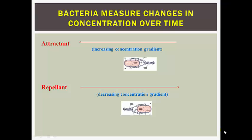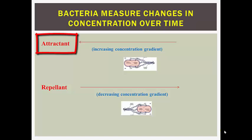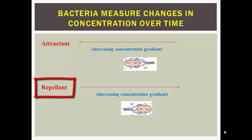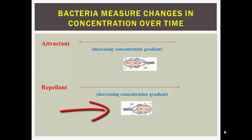As bacteria swim along a concentration gradient, they are detecting the concentration of the chemoeffector over time — they actually remember the previous concentration. For example, if a bacterium is swimming towards an attractant, it will detect increasing concentration over time and will continue moving in that direction. On the other hand, if a bacterium is swimming away from a repellant, it will detect a decreasing concentration over time and will continue swimming away from the repellant.